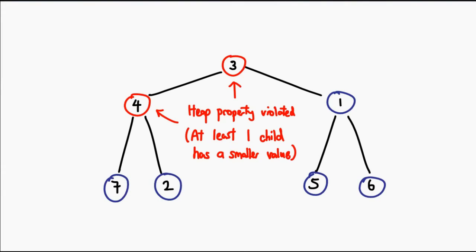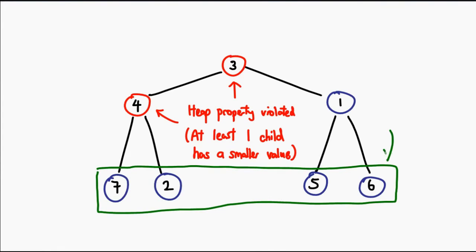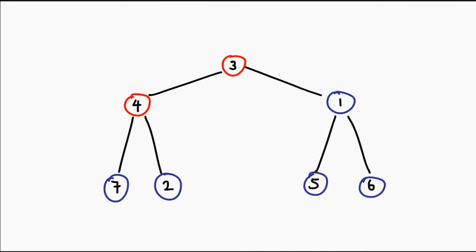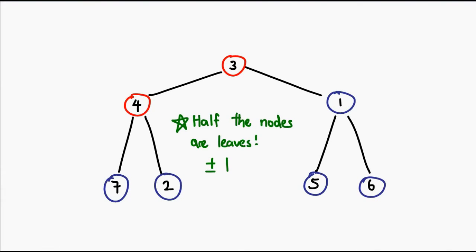In a heap, we don't really care about all the leaves. Why? Because the heap property says: for every node, you want to look at its two children and decide if it's in the correct position. However, all the leaves don't have children, and as a result, there is no way they can actually violate the heap property. So the only nodes we have to look at are the non-leaf nodes, meaning we can safely ignore about half the nodes in the tree. In a complete tree, each level, if completely filled, has twice as many nodes as the previous level. Taking this into account, you'll realize that roughly half the nodes in the heap are leaves and can be safely ignored.